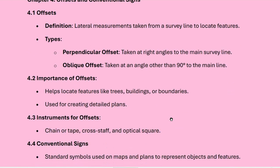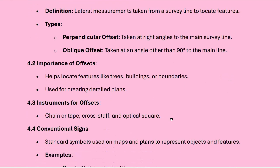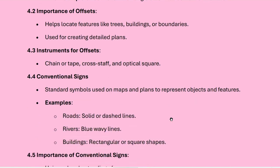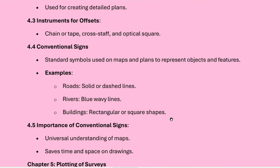The importance of offsets: it helps locate features like trees, buildings, and boundaries, and is used for creating detailed plans. The instruments used for taking offsets include chain or tape, cross staff, and optical squares.